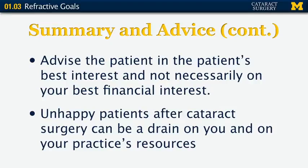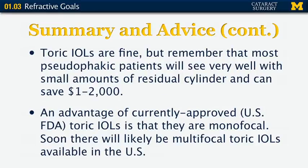Unhappy patients after a cataract operation will not only make the patient unhappy, it will make us unhappy and will be a drain on our practice's resources. Toric lenses are fine in terms of the optics, but remember most pseudophakic patients will see very well with small amounts of residual cylinder without needing to pay out-of-pocket. An advantage of toric lenses as currently approved in the United States is that they're monofocal — meaning no halos, glare, or decreased quality of vision. But multifocal toric lenses are coming and will have the same side effects as multifocal lenses.